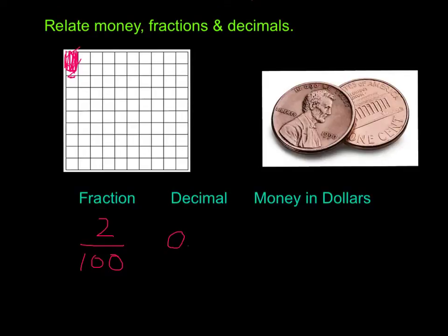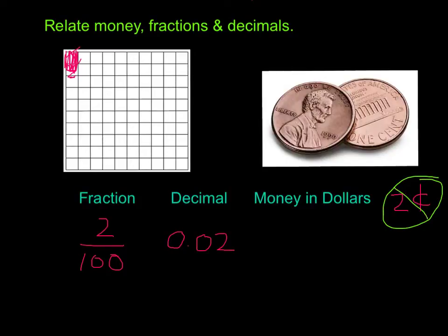Our decimal is going to be zero, because we don't have any dollars. We don't have any tenths, so zero point zero two, because we have two pennies in the hundredths place. In terms of money, we're talking in dollars, so we use our dollar sign, and we write zero dollars and zero point zero two. The only difference between our decimal and our money amount is the dollar sign, which tells us we're talking about money.